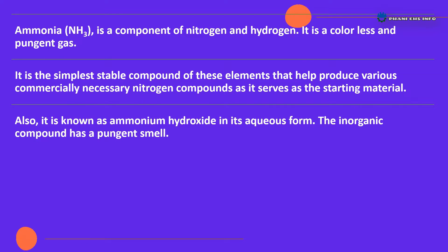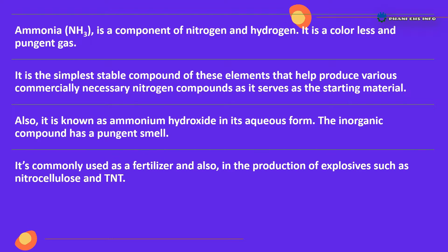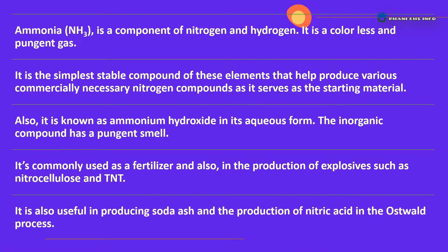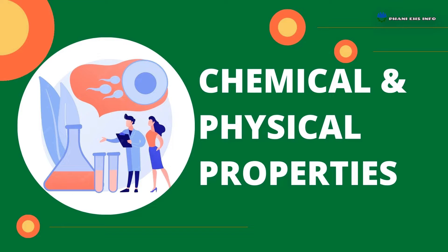It is known as ammonium hydroxide in its aqueous form. The inorganic compound has a pungent smell. It is commonly used as a fertilizer and also in the production of explosives such as nitrocellulose and TNT. It is also useful in producing soda ash and in the production of nitric acid in the Ostwald process.